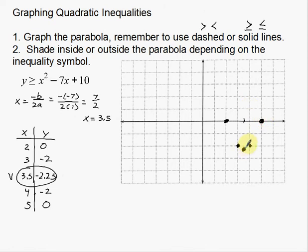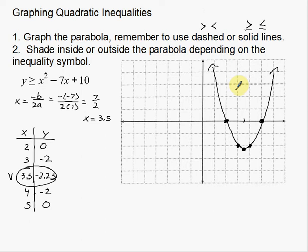You can really start to see the smiley face going on now. Before I start drawing my lines, I need to figure out: do I have a dashed line or a solid line? In this case I have greater than or equal to, so it's going to be a solid line. I'm going to graph my smiley face with a solid line. Make sure you put arrows on the ends of your graphs so the teacher knows the lines go on forever.